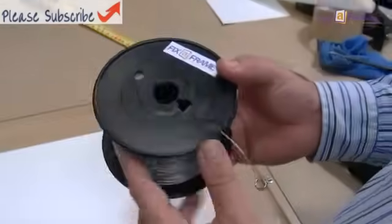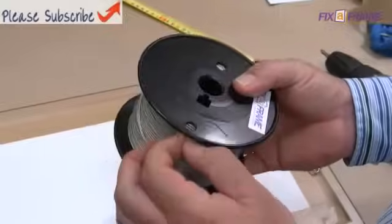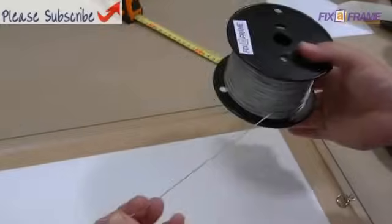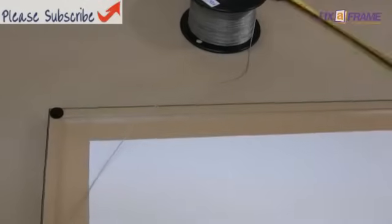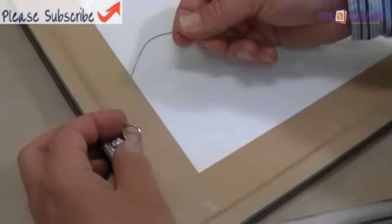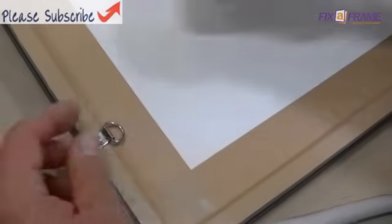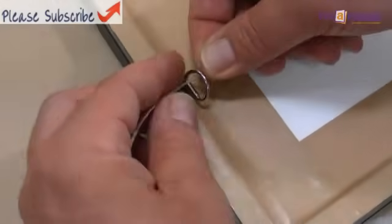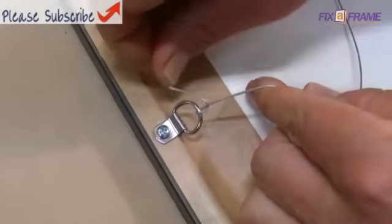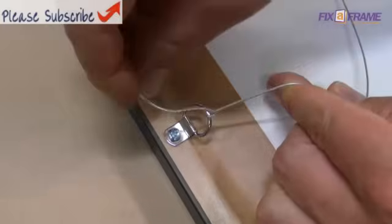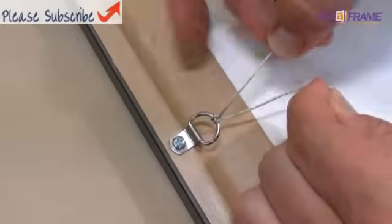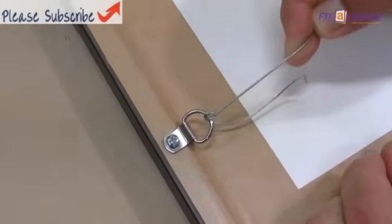Now we're going to use some picture frame wire here. This is a plastic coated stainless steel wire and we use it to hang most of our pictures. Now the trick with tying this wire is we do have a little knot. And what that is, we come up through the D-ring, fold it around, go around itself and back down through the D-ring again.